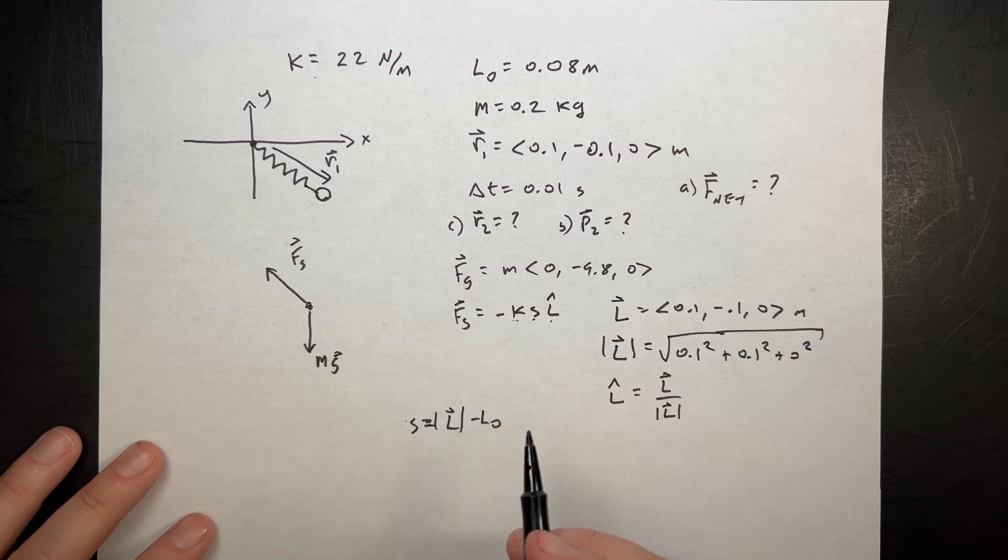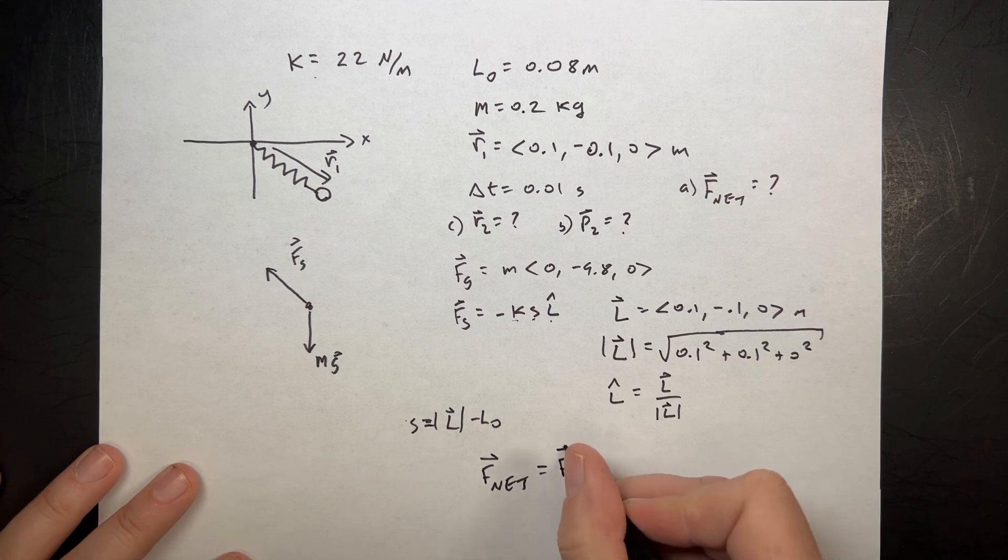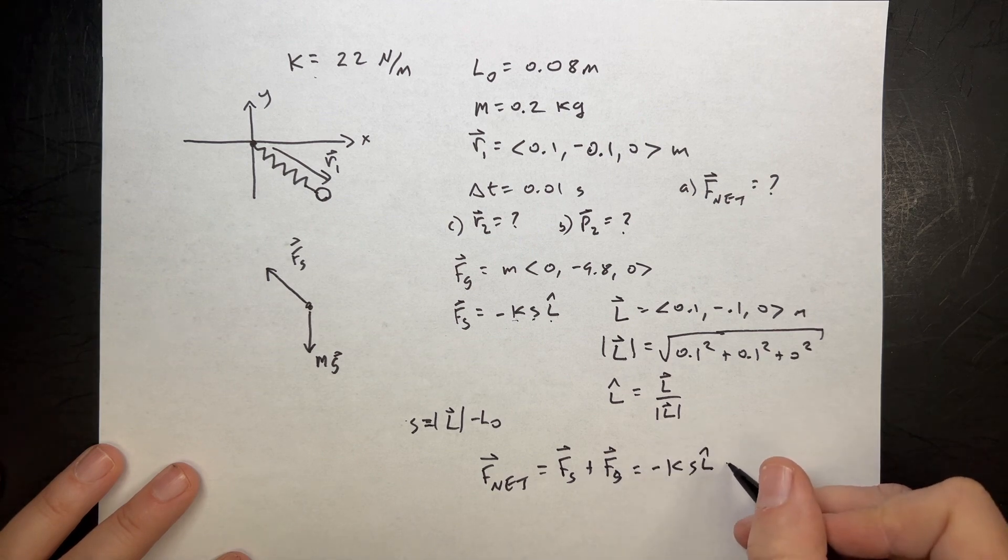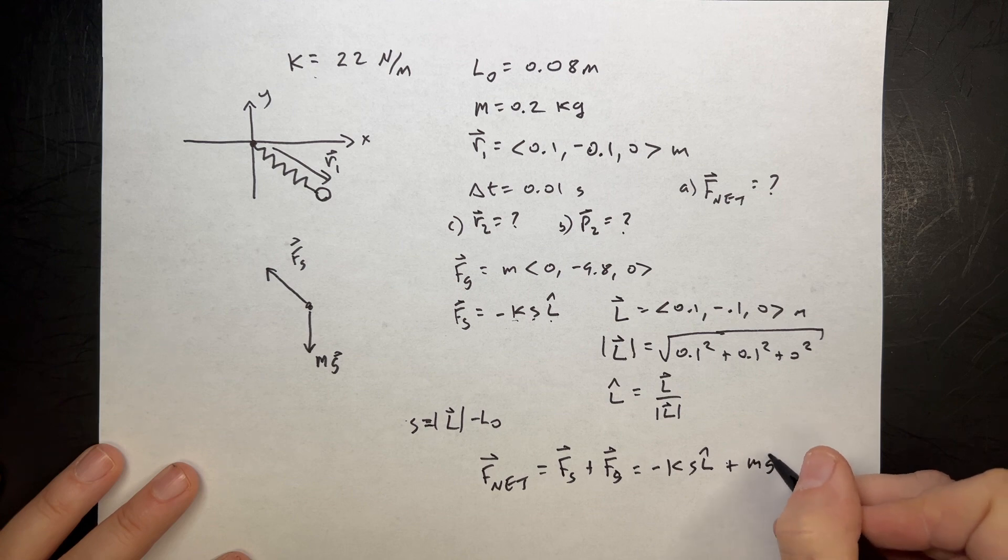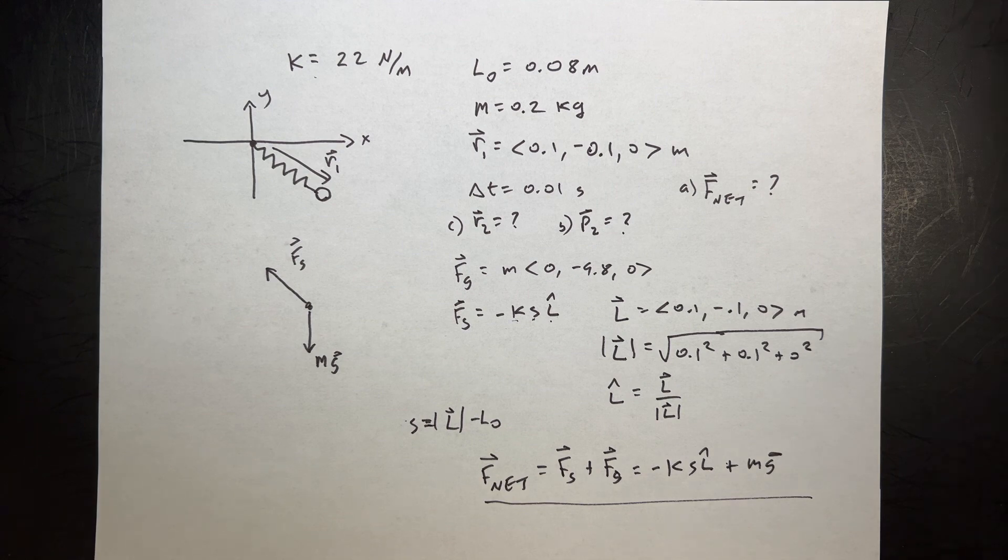That tells me how far it's stretched. And then I have K, I have S, I have L hat, I can find Fs. And then F net is just going to be equal to Fs plus Fg, which is going to be equal to negative Ks L hat plus Mg. And I'm going to do all that in Python, but that's my net force.